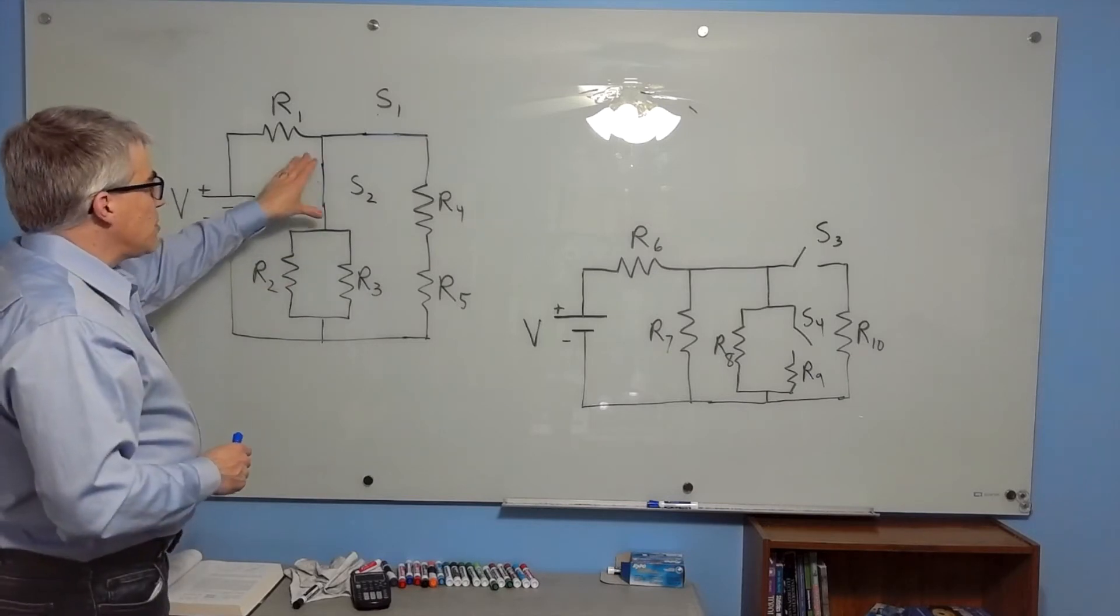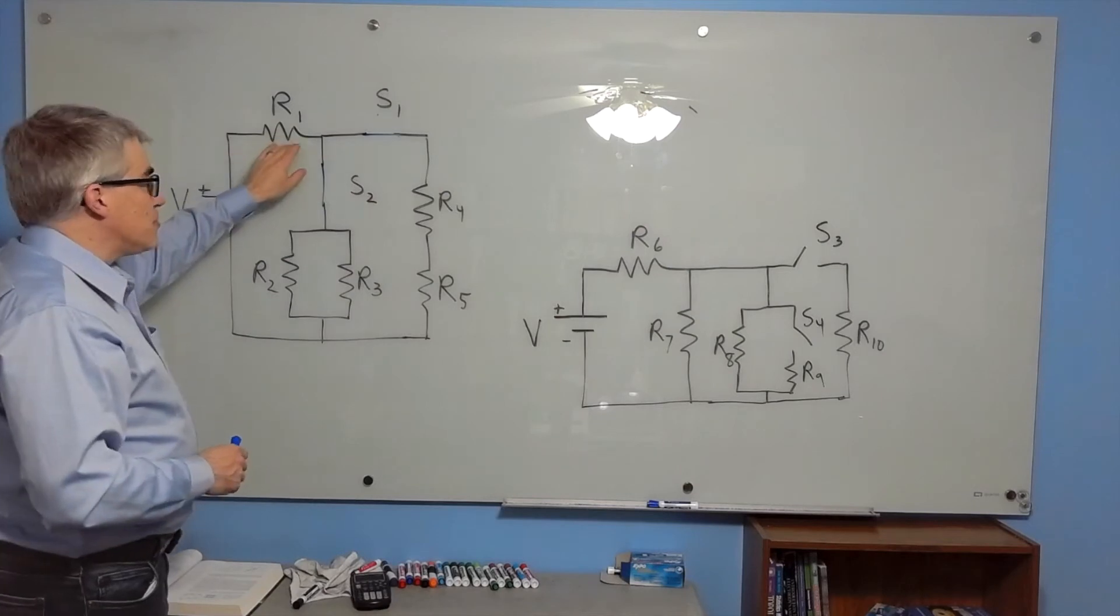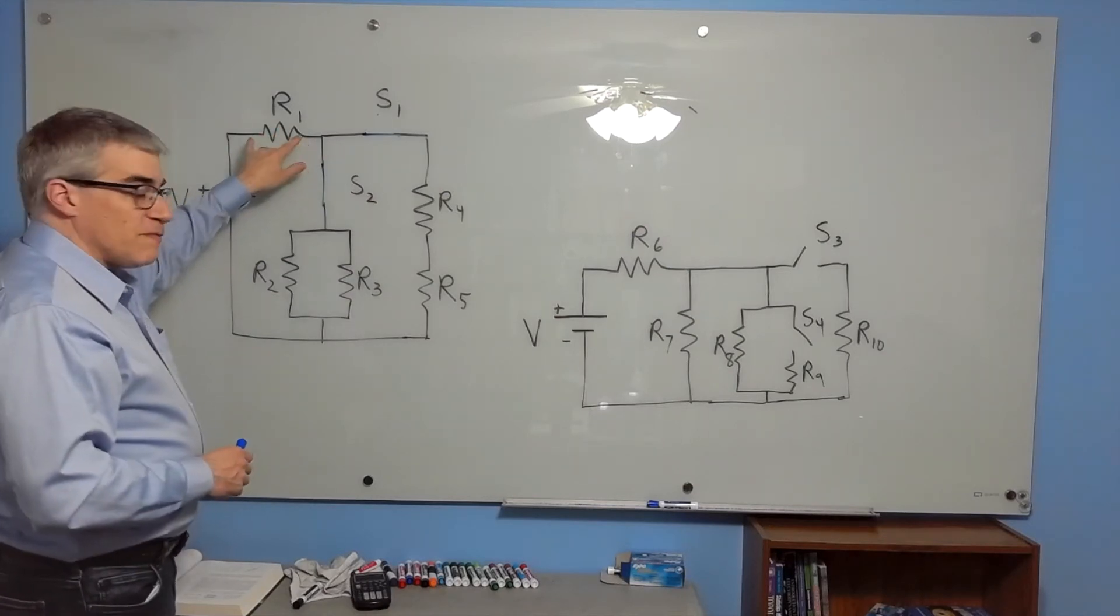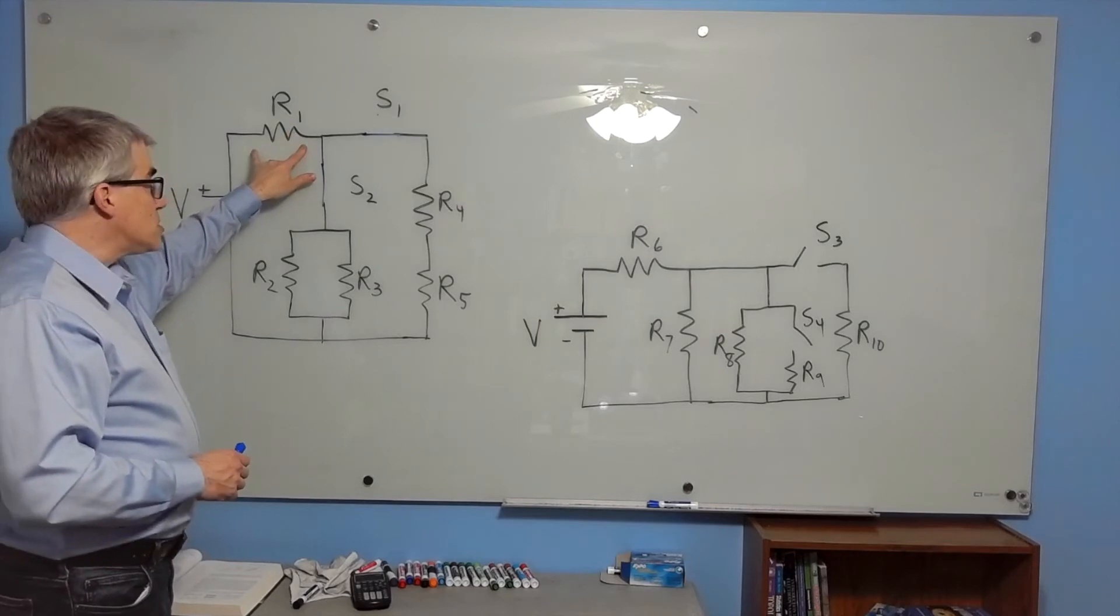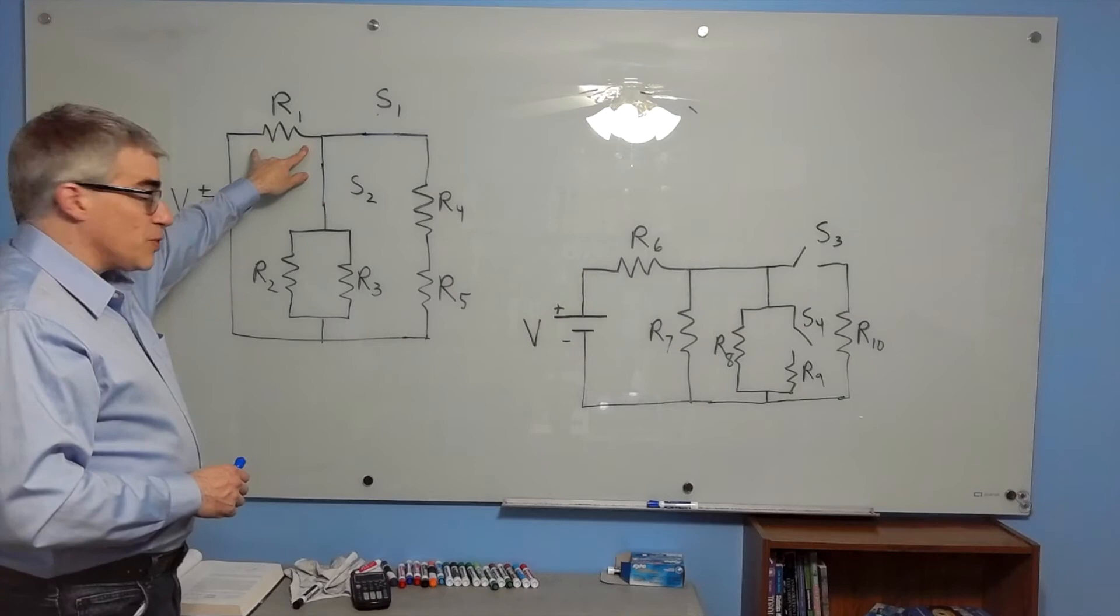Now we know that we've added a path so the resistance goes down, so there's more current running through R1. If there's more current through R1, there's more of a voltage drop across R1, which means there's less voltage left for the rest of the circuit,